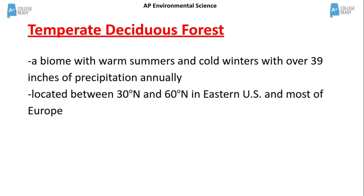The temperate deciduous forest is a biome with warm summers and cold winters with over 39 inches of precipitation annually. Temperate deciduous forests are located between 30 degrees north and 60 degrees north latitude in the eastern U.S. and most of Europe.